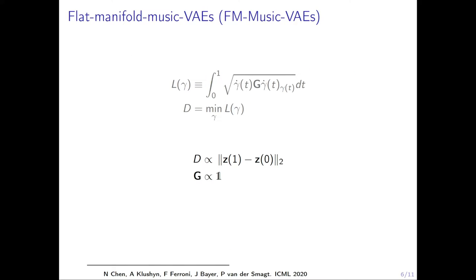If we want to have a smooth latent space, we can preserve the distance of the model, which means given any two points, the Riemannian distance is approximate to the Euclidean distance in the latent space. If we take this back into the definition of the length, we can get the metric tensor is approximate to identity matrix.